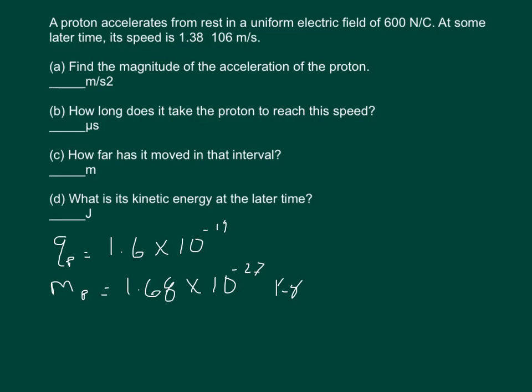We know that the electric field is 600 newtons per coulomb, and we know that the final velocity is 1.38 times 10 to the sixth meters per second.